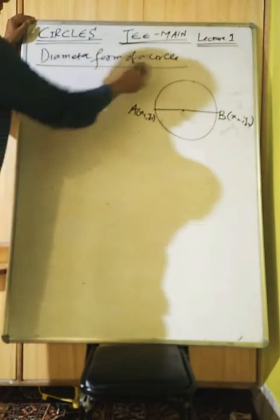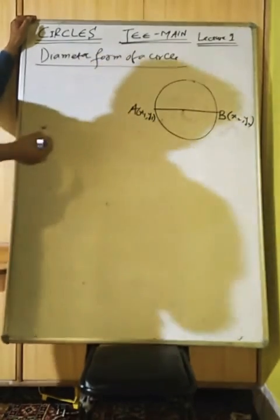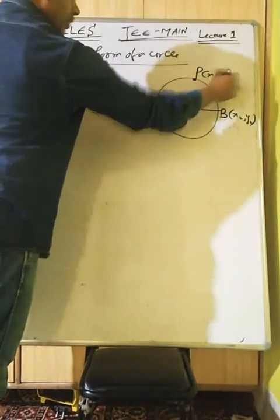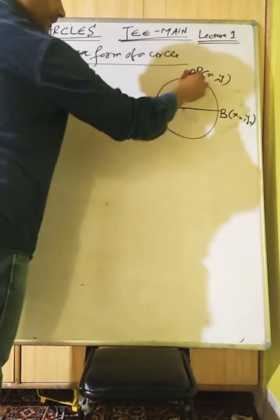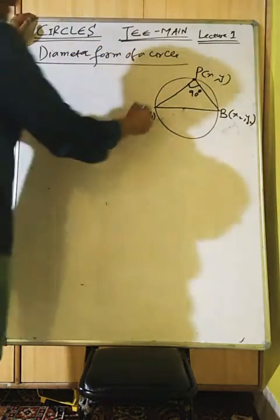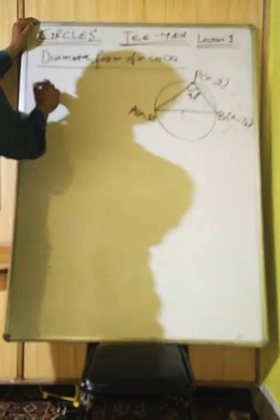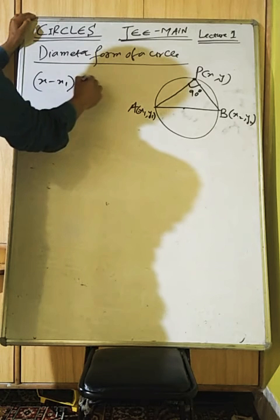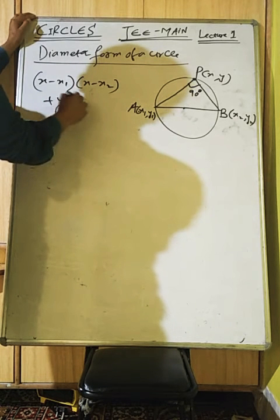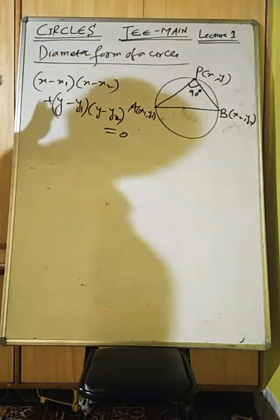This is the diameter form of a circle. It means A and B are the ends of a diameter. Let P(x,y) be any point on the circle. Since the angle in a semicircle is 90°, the equation comes out to be: (x−x₁)(x−x₂) + (y−y₁)(y−y₂) = 0.